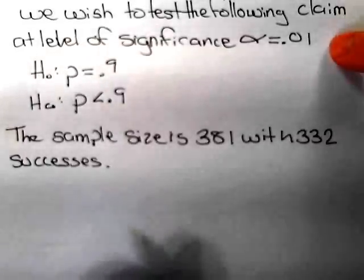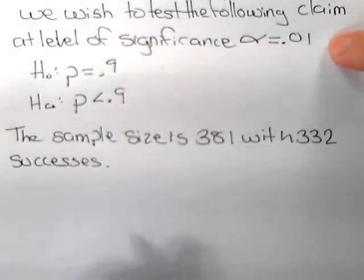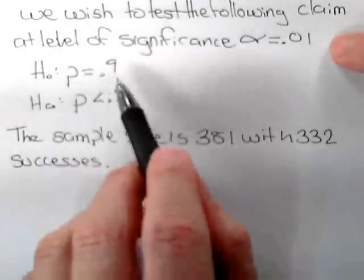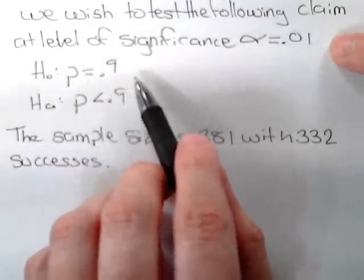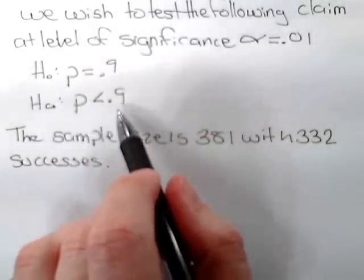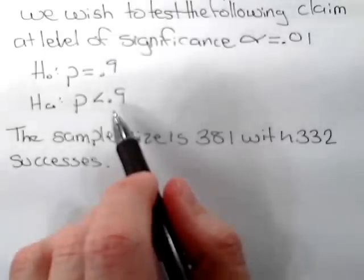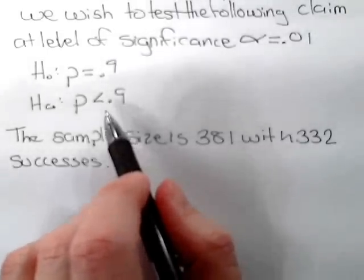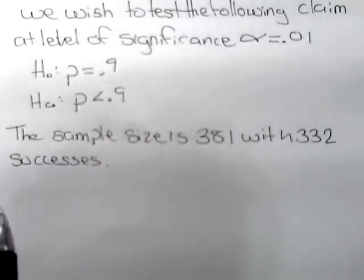We wish to test the following claim at a level of significance of alpha equals 0.01. The null hypothesis is that the population proportion is 0.9, and the alternative hypothesis is that the population proportion is less than 0.9.